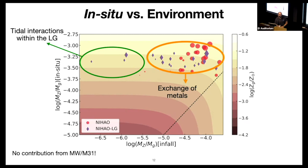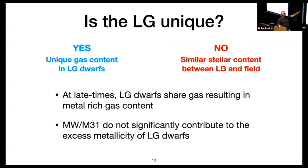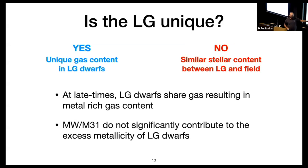To conclude: I started by asking whether the local group is unique. The answer is yes and no. Yes, we find a unique dwarf gas content in local group dwarfs, but no, because the stellar content is just about the same. The stellar content is the same because the high-metallicity gas hasn't had the time to cool down onto the central parts and form stars. Also, the Milky Way–Andromeda system does not significantly contribute to the metal enhancement of these local group dwarfs.